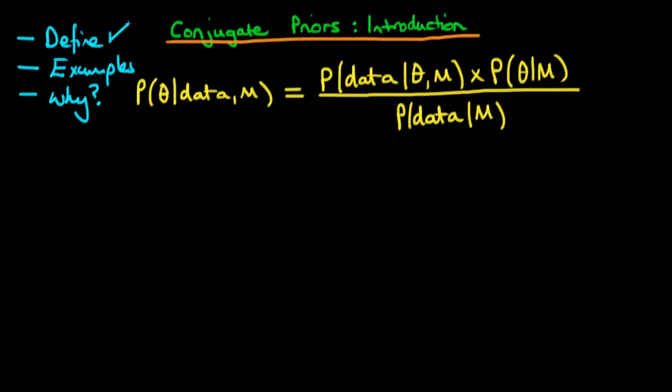Okay, so first of all, what do we actually mean by a conjugate prior? How do we define it? Well, the idea here is that if we have a given likelihood function, so let's say our likelihood, which, remember, is this part of the numerator. So our likelihood is the probability of our data given our choice of theta and given our model choice.